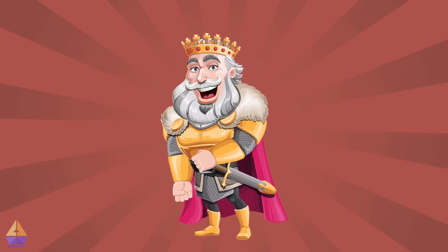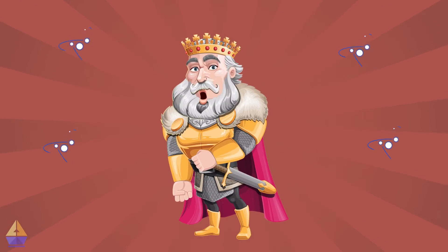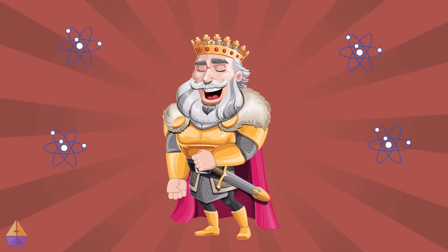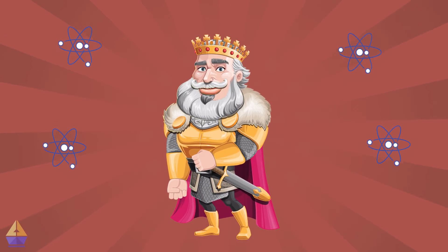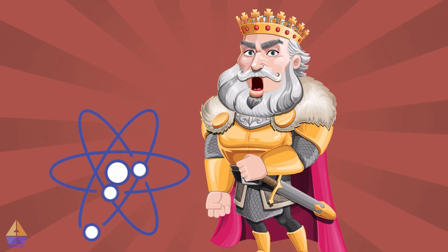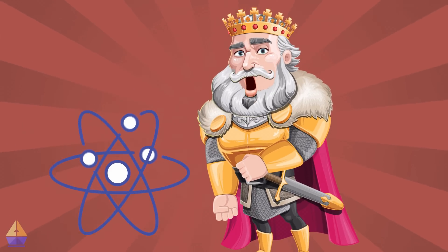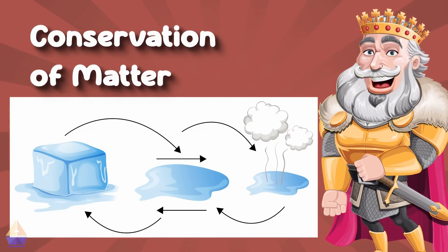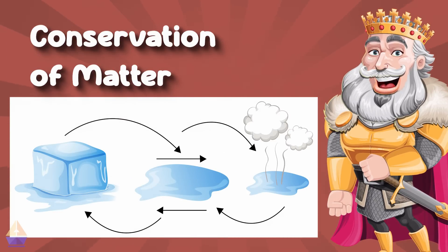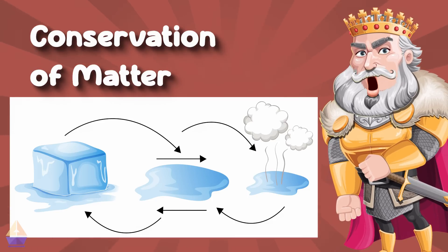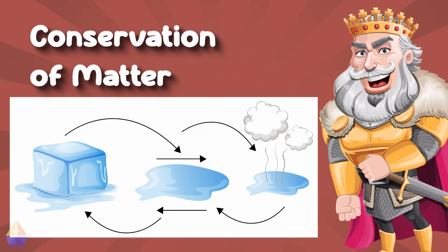If you remember our last lesson, everything around us is made of tiny particles of matter. Today, we're going to discover something amazing about these particles. These particles cannot be created or destroyed. This concept is known as the conservation of matter. It means that no matter what changes or reactions occur, the total amount of matter always remains the same. While it might change form, it never just vanishes.